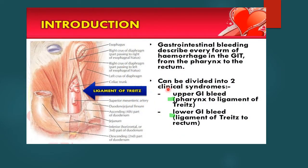GI bleeding can be divided into upper and lower GI bleeding. The demarcating point is the attachment of the ligament of Treitz at the duodenojejunal flexure. Anything proximal to it is considered upper GI bleed, and all bleeding distal to that ligament of Treitz is considered lower GI bleed.